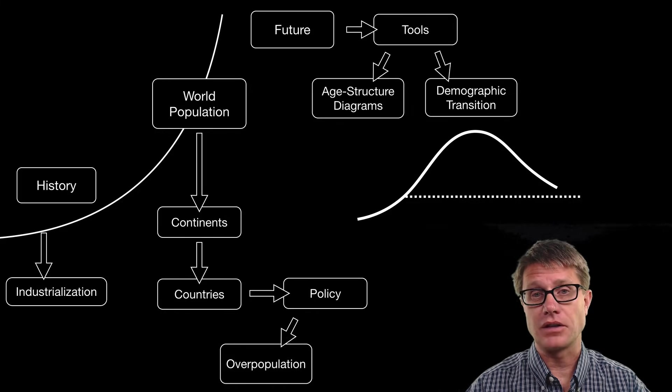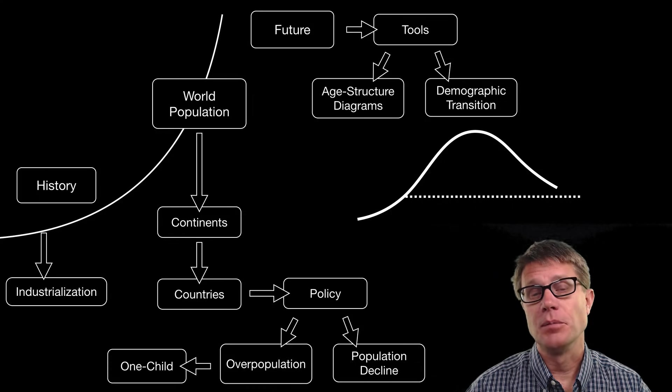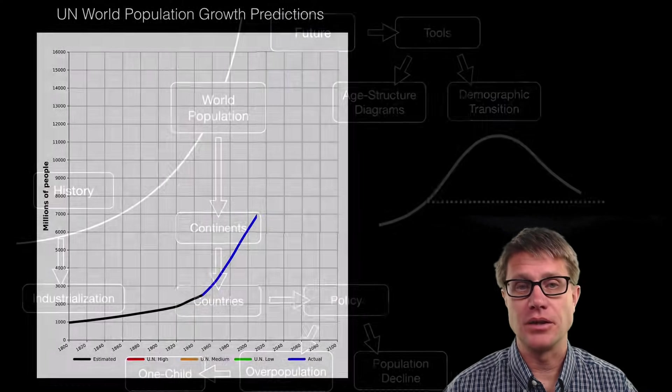Both policy changes that affect overpopulation, so that increasing population, or that population decline. The most famous example is China's one child policy. But we will talk about some other ones as well.